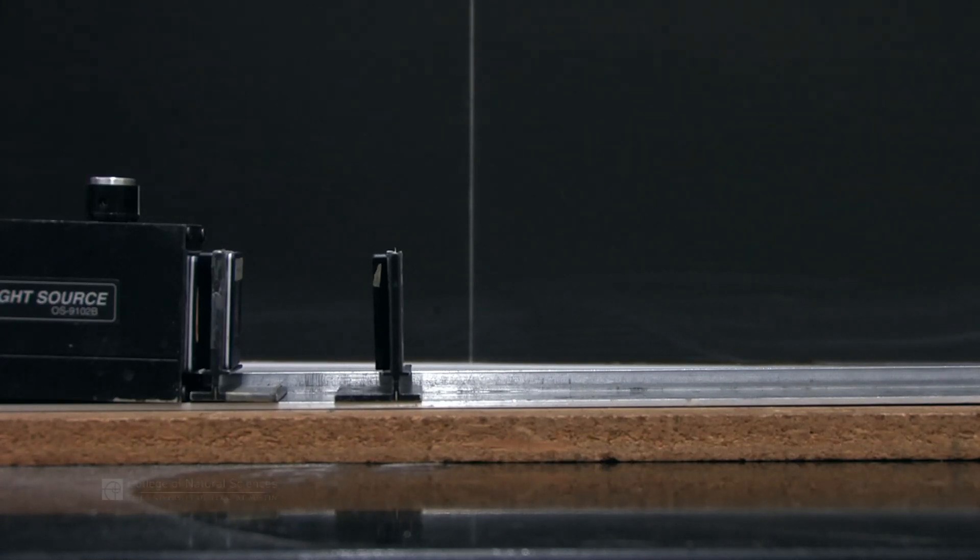In this lab, we're going to look at geometric optics, or how light travels through curved surfaces. What we're going to mainly investigate is: is there a relationship, and what is the relationship?